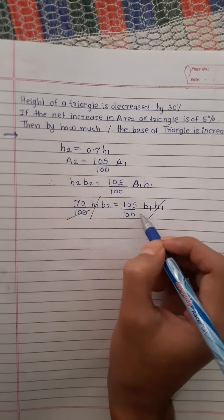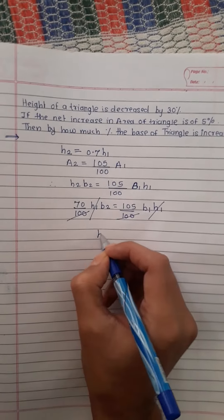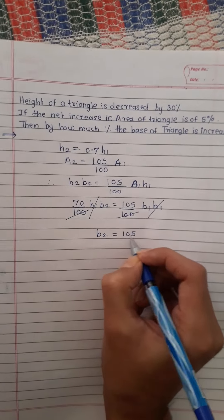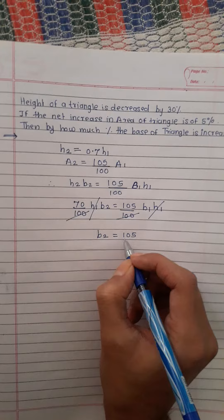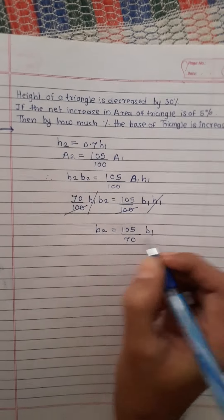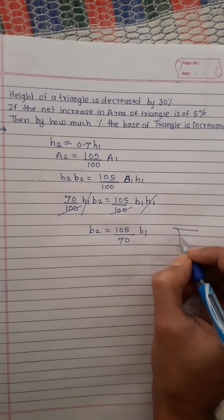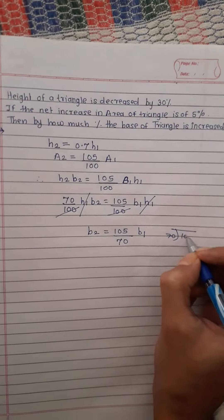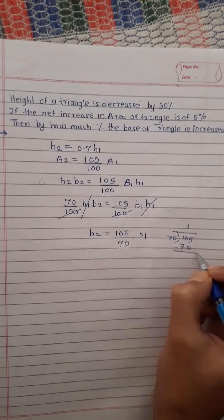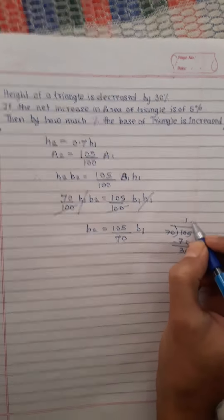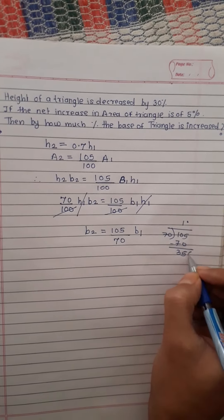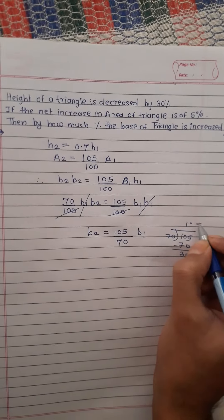Here remaining is b₂ is equal to 105 divided by 70 into b₁. Here 70 and 105, 7 goes into 70 once, remaining is 35. This point is 0, this is 5.